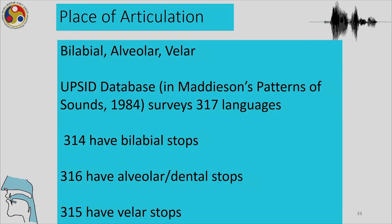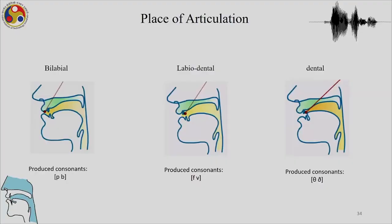The UPSID database — Patterns of Sounds — surveyed 317 languages, of which 314 have bilabial stops, 316 have alveolar/dental stops, and 315 have alveolar stops. We can see that these are the most commonly found places of articulation.